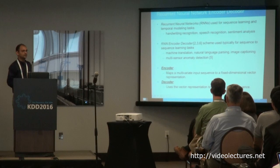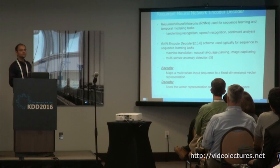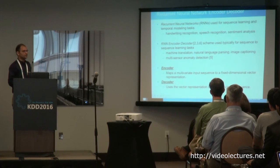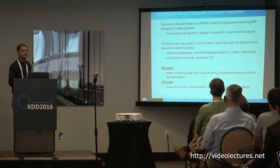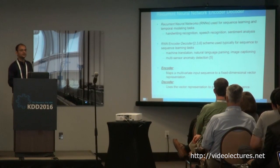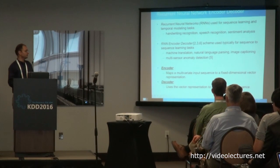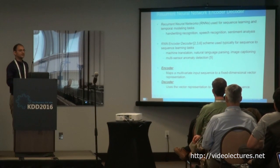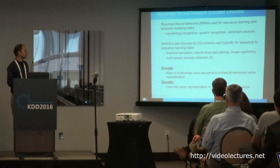A quick overview of RNN encoder-decoder: recurrent neural networks have been successfully used for sequence learning and temporal modeling tasks such as handwriting recognition, speech recognition, and sentiment analysis. The RNN encoder-decoder scheme is used for sequence-to-sequence learning tasks — for example, machine translation, where you are given a sequence of words in one language and must translate it into another sequence in another language. Similarly, natural language parsing and image captioning have all been successfully addressed using RNN encoder-decoder.